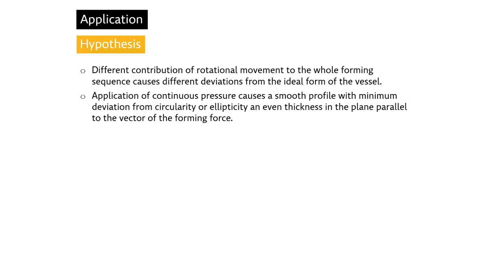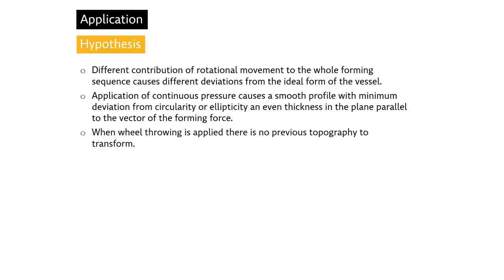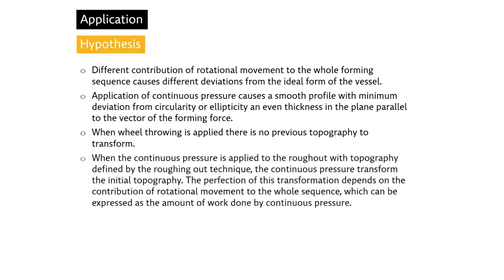The topography is linear and its perpendicular profile depends on the forming tool. When wheel throwing is applied, there is no previous topography to transform; therefore, the topography is created by continuous pressure. When continuous pressure is applied to the rough-out with topography defined by the roughing-out technique, the continuous pressure transforms the initial topography. The perfection of this transformation depends on the contribution of rotational movement to the whole segment, which can be expressed as the amount of work done by continuous pressure. If the forces act to achieve the ideal form, they can all theoretically sooner or later reach it. The difference is in the amount of work needed to achieve the ideal form.